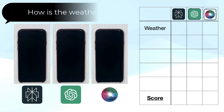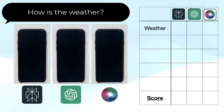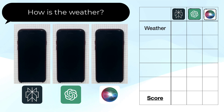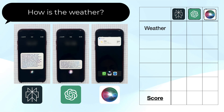If you want to read the full answers, I suggest you quickly pause the video. Let's start with a question about the weather: How is the weather? As you see, only vanilla Siri was able to answer the weather question — Perplexity and GPT both failed this one.